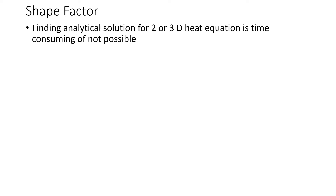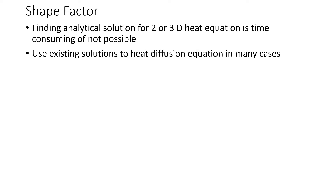In this video we will be talking about shape factors and how we use shape factors to approximate solutions and find solutions easily. For complicated 2D or 3D problems it takes a lot of time to find the analytical solution, or sometimes the analytical solutions do not exist. So what we do is we use existing solutions to the heat diffusion equation for some standard cases, and if our problem fits into those standard cases, we use them to calculate the heat transfer rate in that particular scenario.